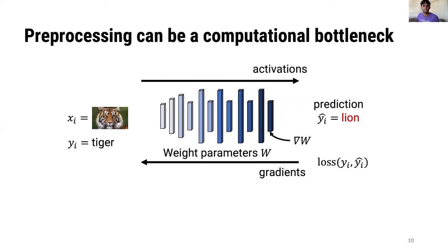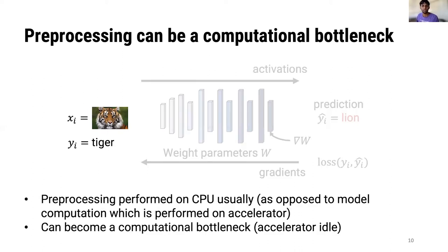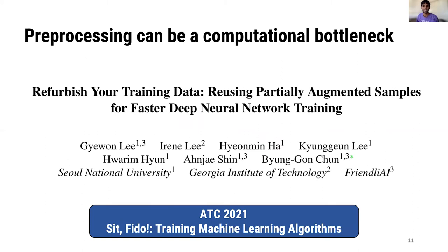For certain types of machine learning training workloads, for example vision, pre-processing — which is usually performed on the CPU as opposed to the accelerator — can take a significant fraction of total time, especially for less computationally intensive models. Examples of pre-processing could be image decoding, cropping, adding noise, as well as rotating the image. Refurbish Your Training Data reuses pre-processing computation across multiple input samples, thus helping make training less pre-processing bound.